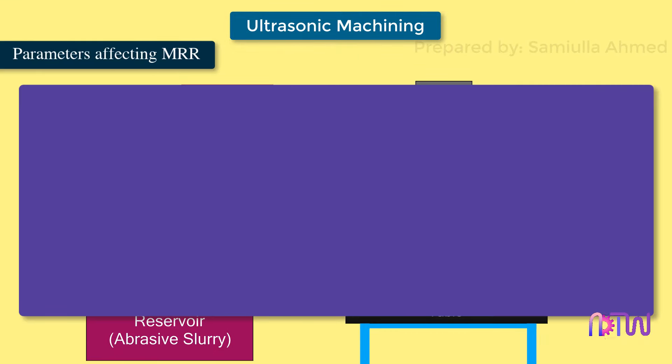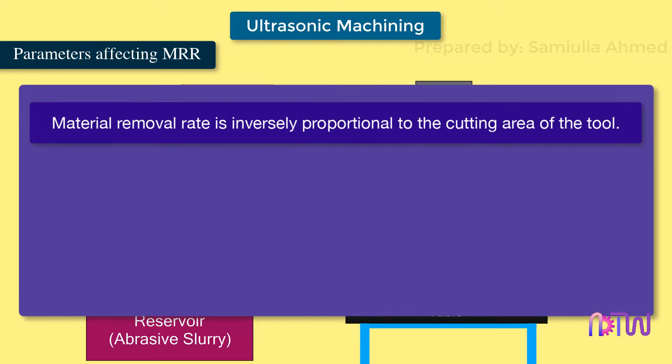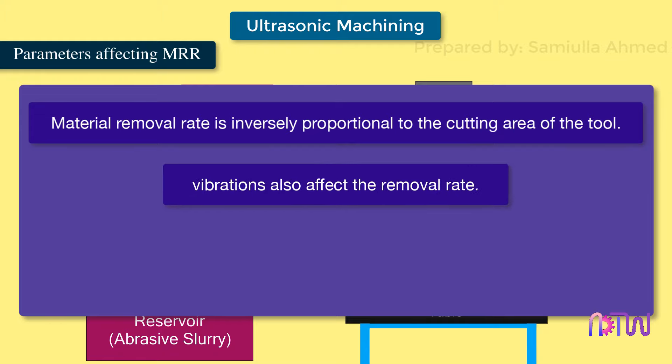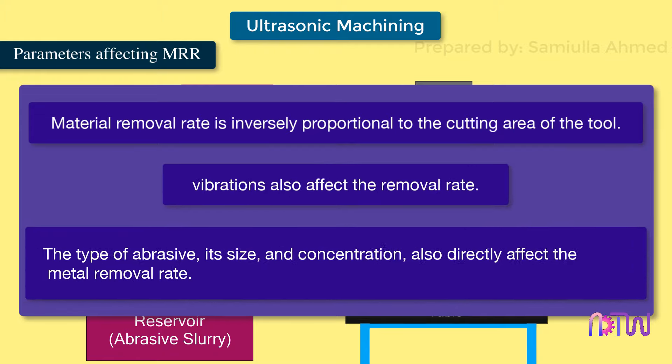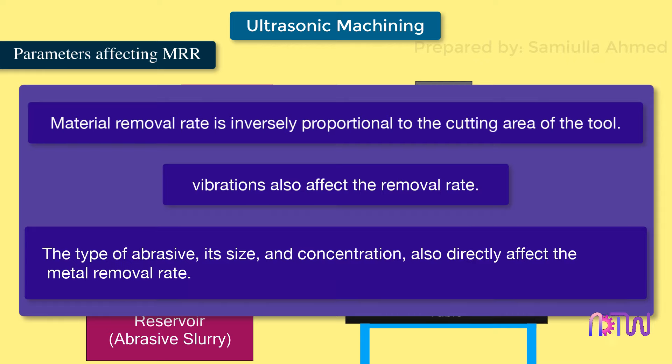Parameters affecting the metal removal rate: Material removal rate is inversely proportional to the cutting area of the tool. Vibrations also affect the removal rate. The type of abrasive, its size and concentration also directly affect the metal removal rate.